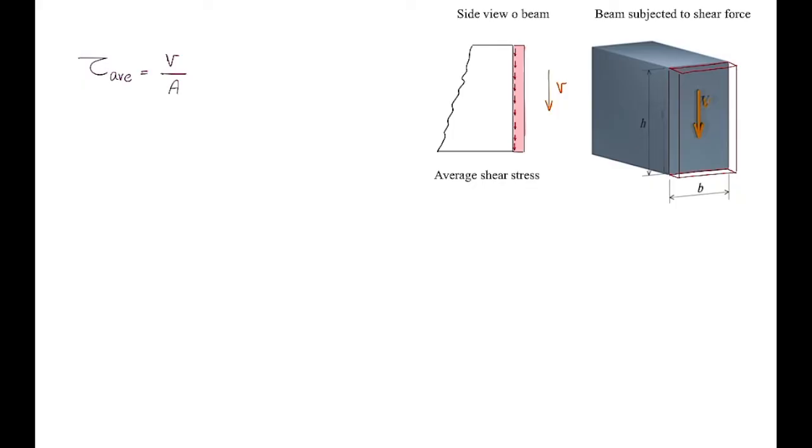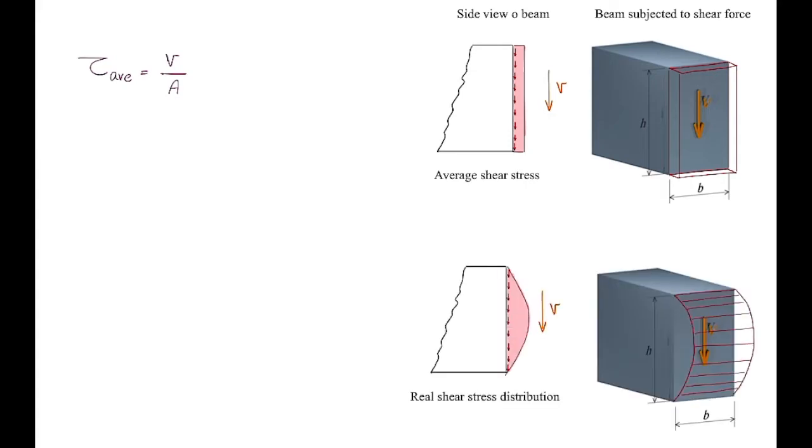But this is going to be the average shear stress. But shear stress distribution is not uniform on a section. It would have zero value on top and on the bottom, and it is maximum at the centroid.